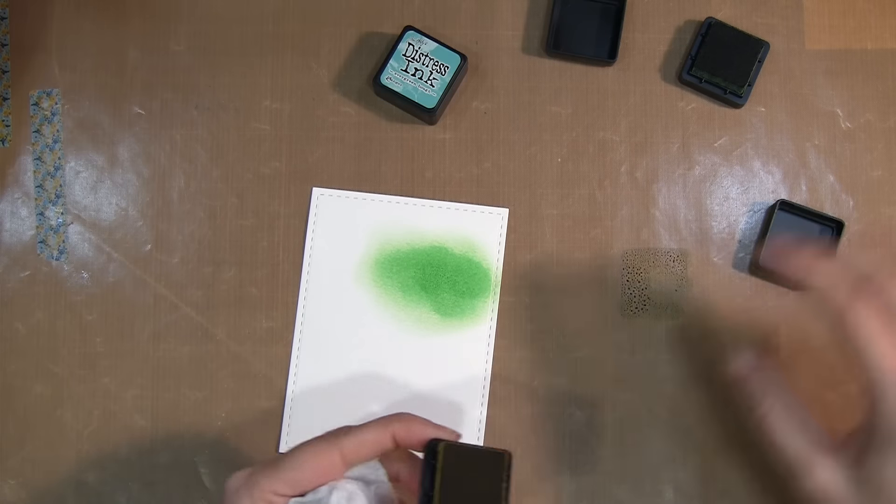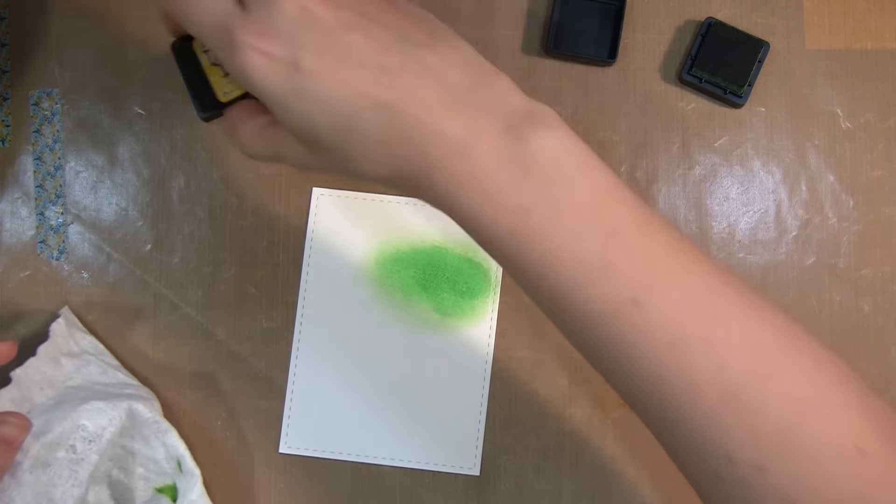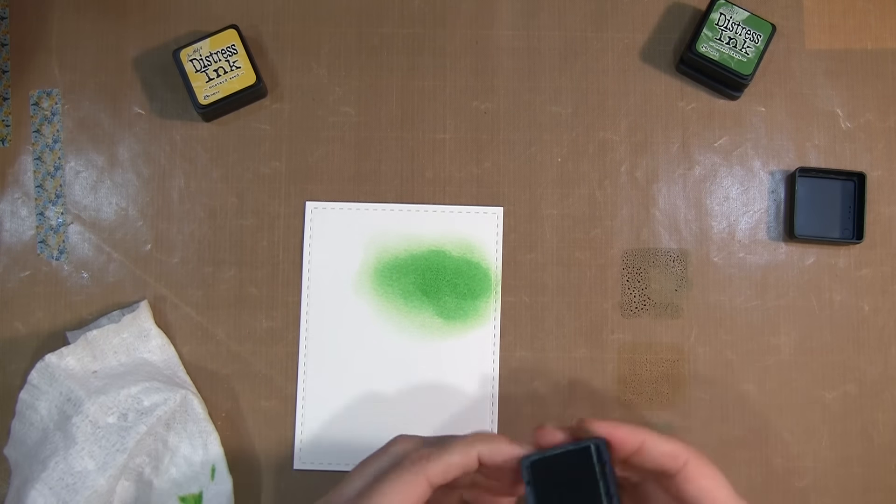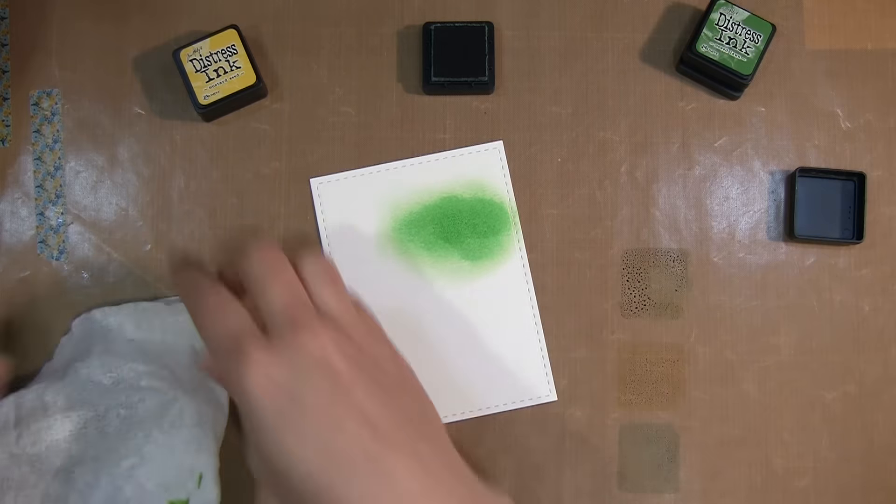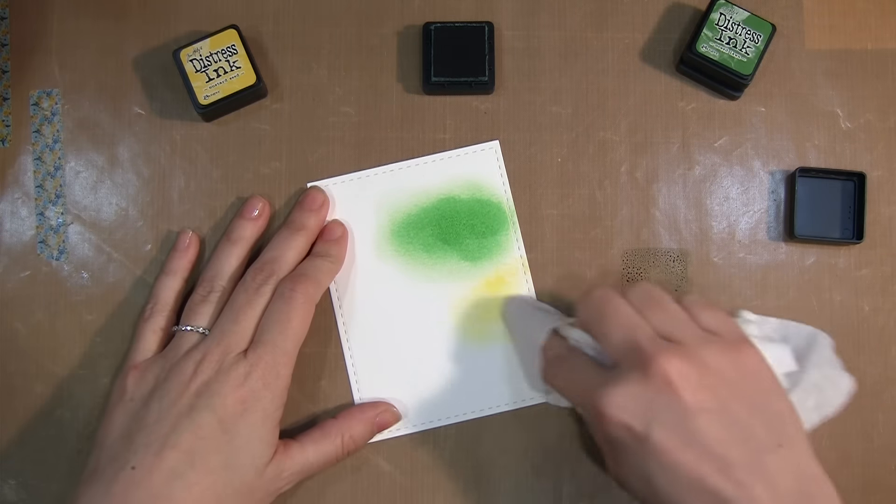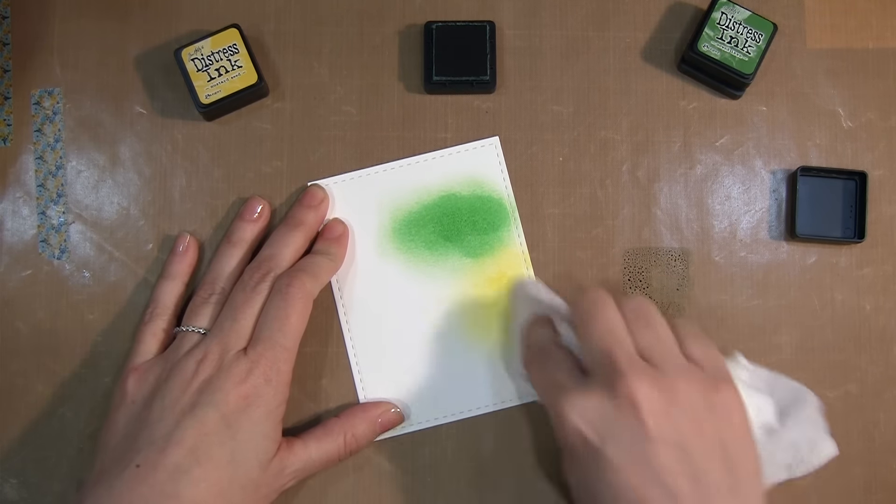I prefer watercolor paper because it can handle the wetness of the baby wipe and the rubbing motion. Sometimes cardstock can't handle that. You can try it. I just decided to go with watercolor paper.